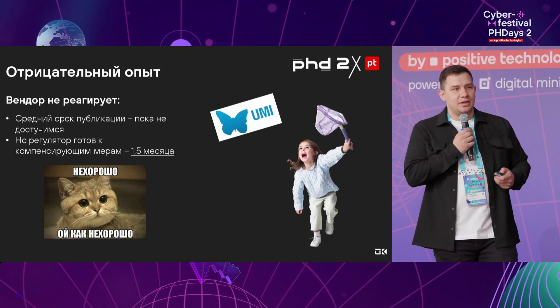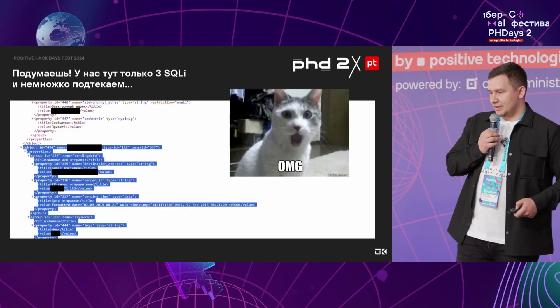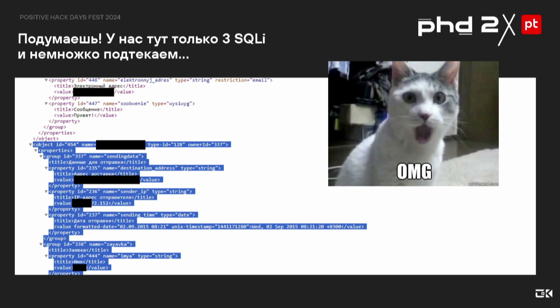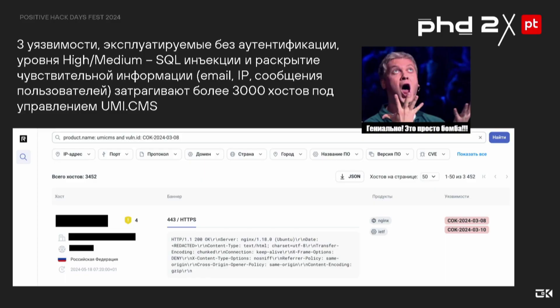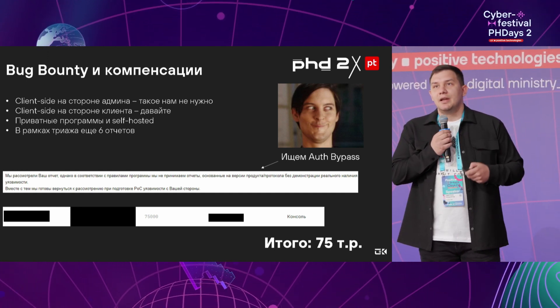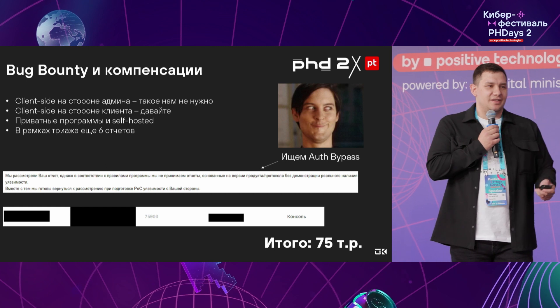Here, the problem is you need to introduce some mitigation measures. Unfortunately, this particular issue is not yet closed, but hopefully it will be fixed in UMI CMS. I don't fully understand the vendor's position, because they have a serious vulnerability related to data disclosure and data leaks. I offered them the service for free, but they are still not interested. This vulnerability impacts about 3,000 hosts. We have a bug bounty platform — the awards are not too big, but still it's a nice thing to have.